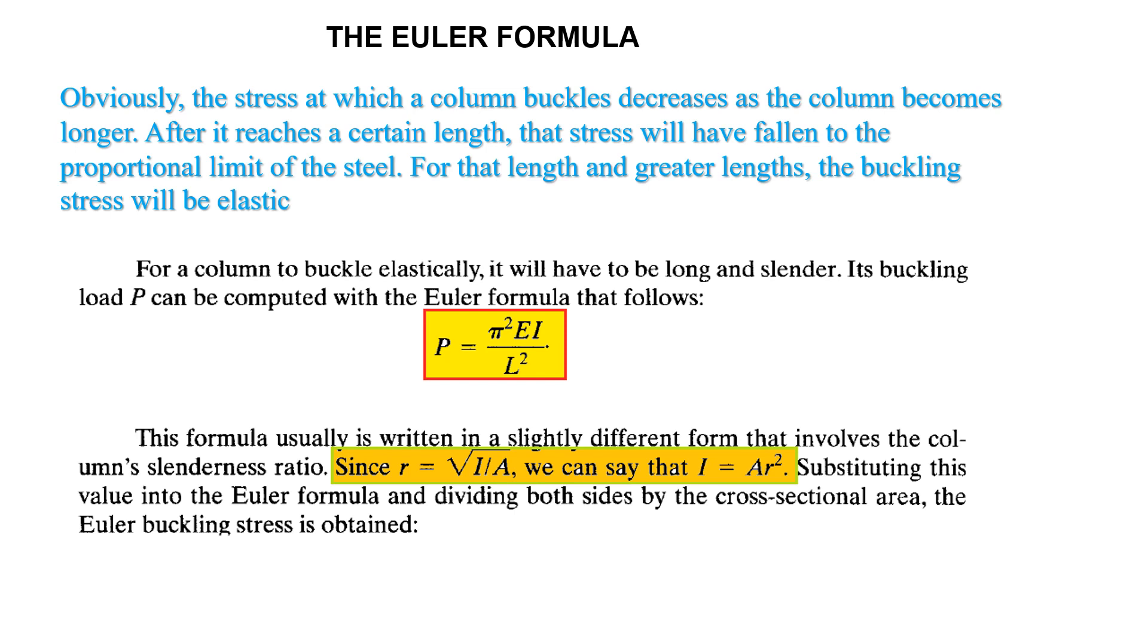Since radius of gyration is the square root of I by A, we can say that I equals A R squared. Substituting this value into the Euler formula and dividing both sides by the cross-sectional area, the Euler buckling stress is obtained: P by A equals π squared E by L by R squared equals Fe.